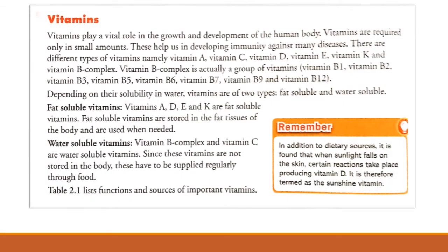We have learned about nutrients. The five major nutrients are carbohydrates, fats, protein, vitamins and minerals. Out of these five, we have already learned about carbohydrates, fats and protein in the last video. Now we will learn about vitamins and minerals.